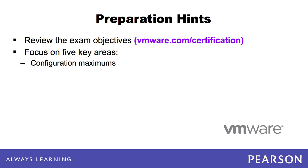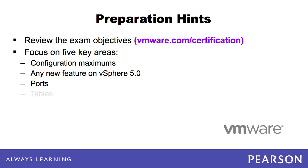The five key areas are: configuration maximums for anything and everything; any new features in vSphere 5.0; ports; anything you find in a table; and dialog boxes. Spend some time learning what is in each dialog box in the GUI tools of vSphere and what's not on them.